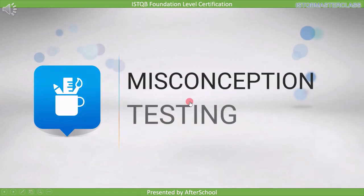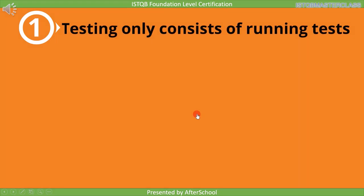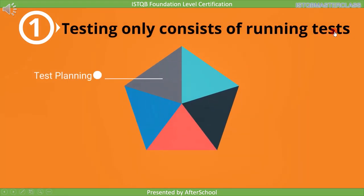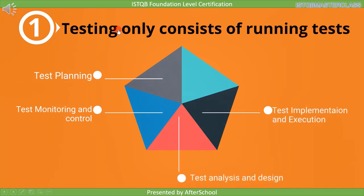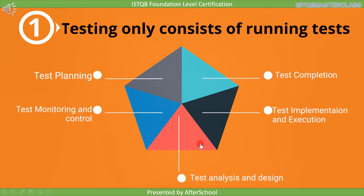Now we will see some misconceptions about testing. The first misconception is that testing only consists of running test cases, which is completely wrong. Testing is a process and consists of many activities: test planning, test monitoring and control, test analysis, test design, test implementation, test execution, and test completion. We will discuss each of these activities in detail in future lectures, but for now you need to remember these activities in the same order as listed.